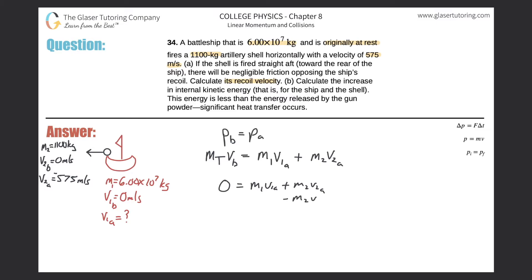So solve this for V1A. Subtract this over, minus M2 V2A. So now we've got negative M2 V2A, and that will equal M1 V1A. And now just divide out M1 to get V1A by itself. So our formula works out to be negative M2 V2A all over M1, and that will equal V1A. And there's our beautiful formula.